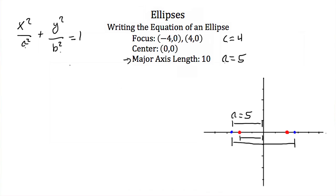I can find my b value by using the equation c squared is equal to a squared minus b squared. I'm using this equation with a squared listed first because my major axis is in the x-direction. So if I plug these values into this equation I'll have 4 squared is equal to 5 squared minus b squared. This is 16 is equal to 25 minus b squared.